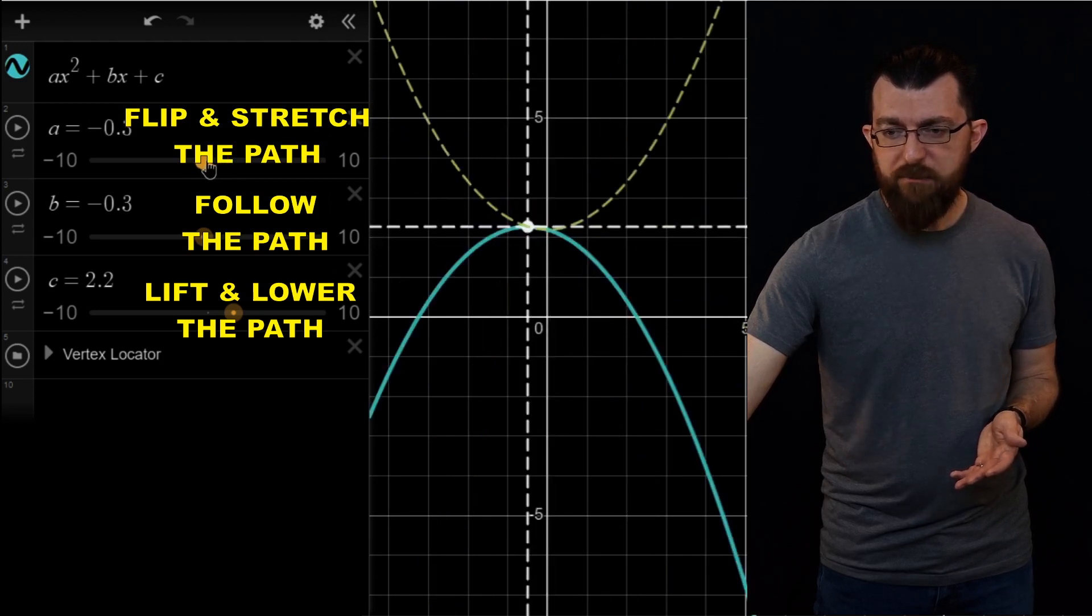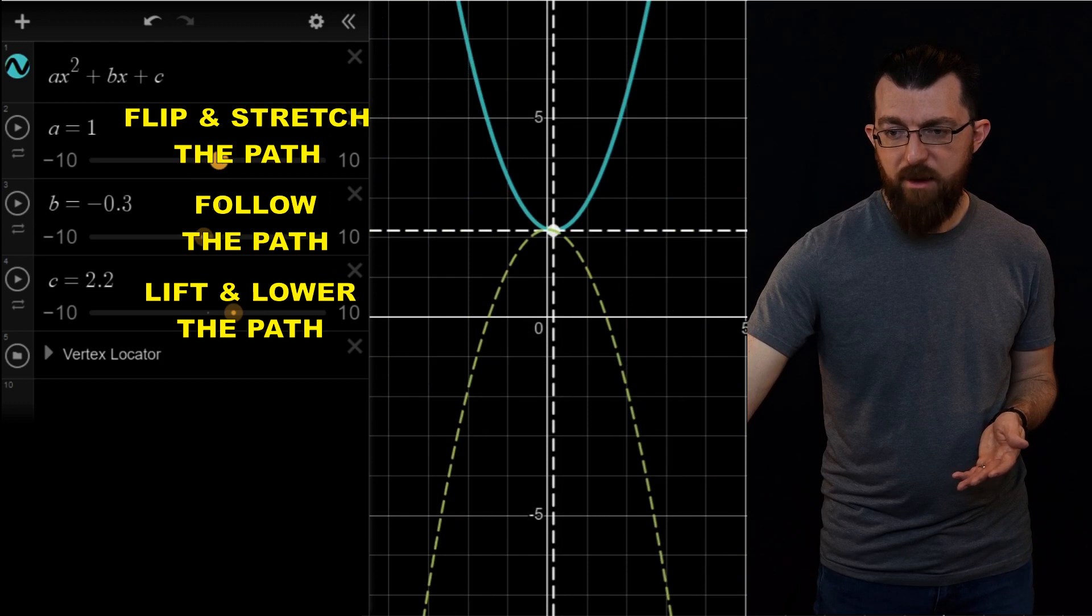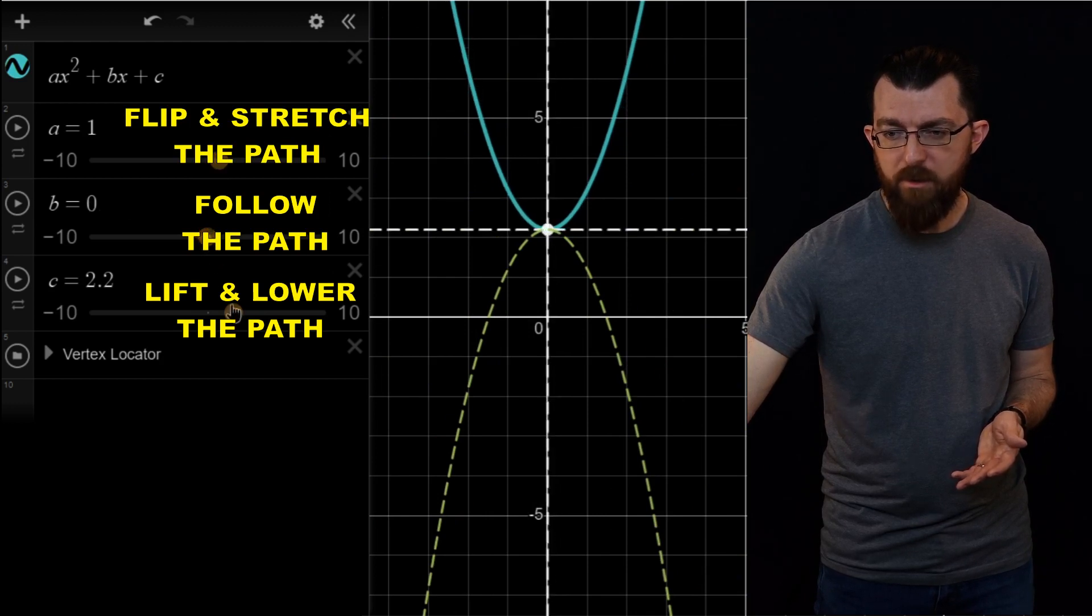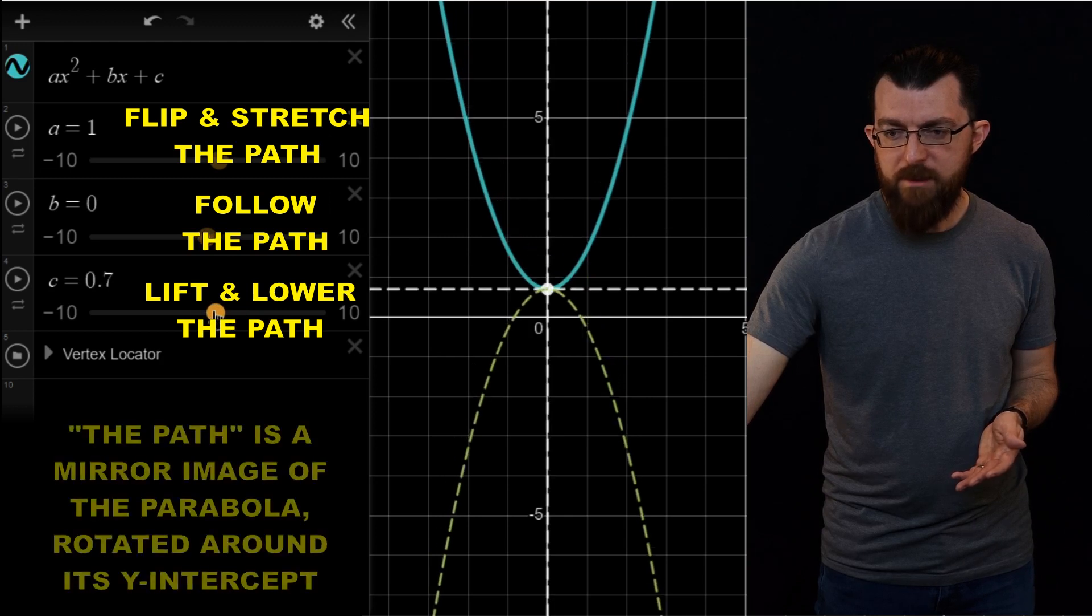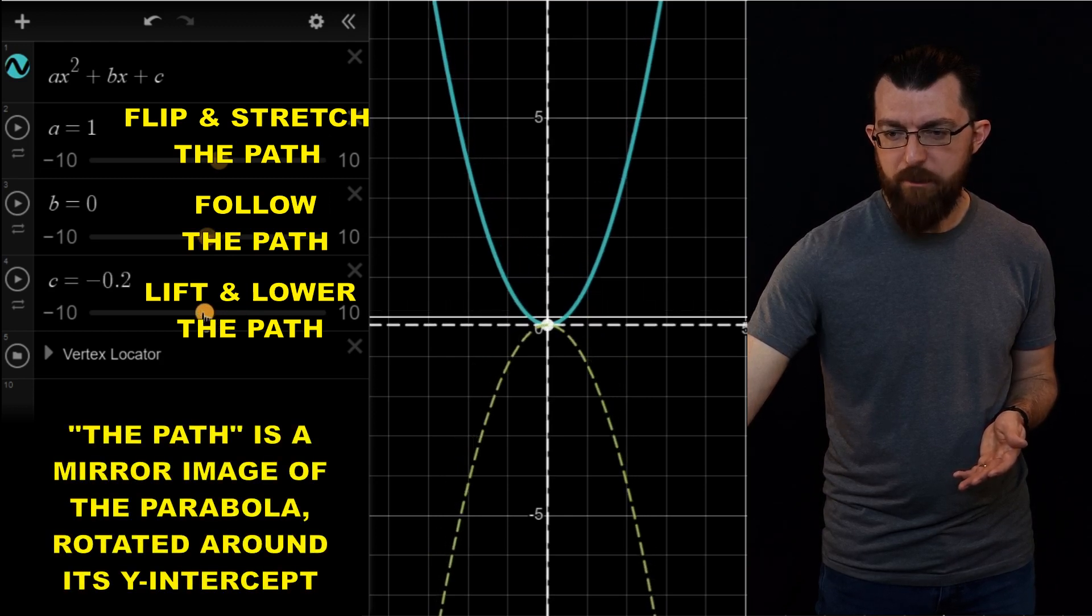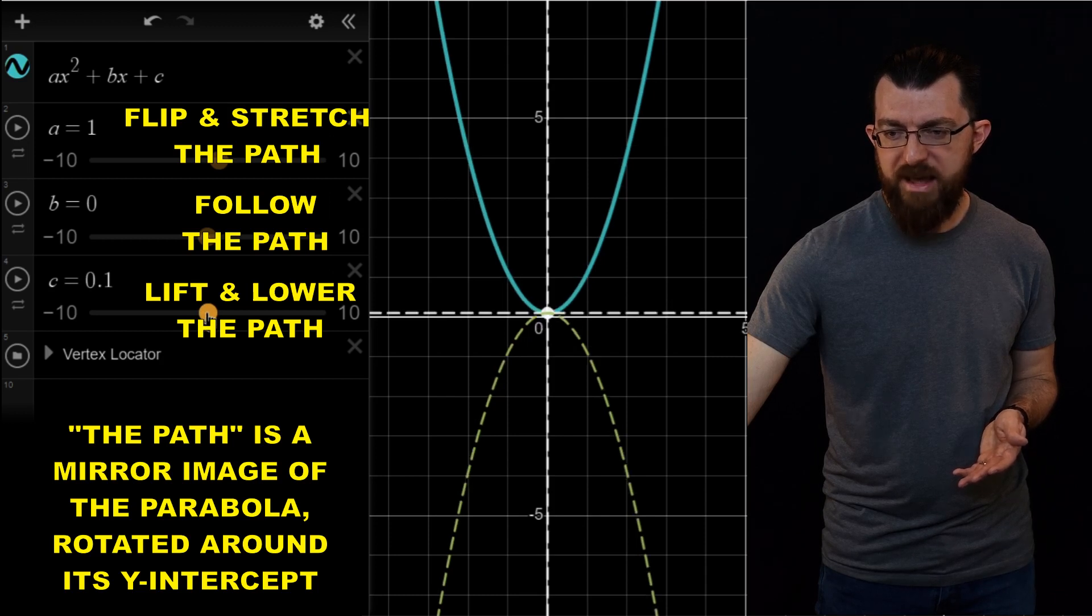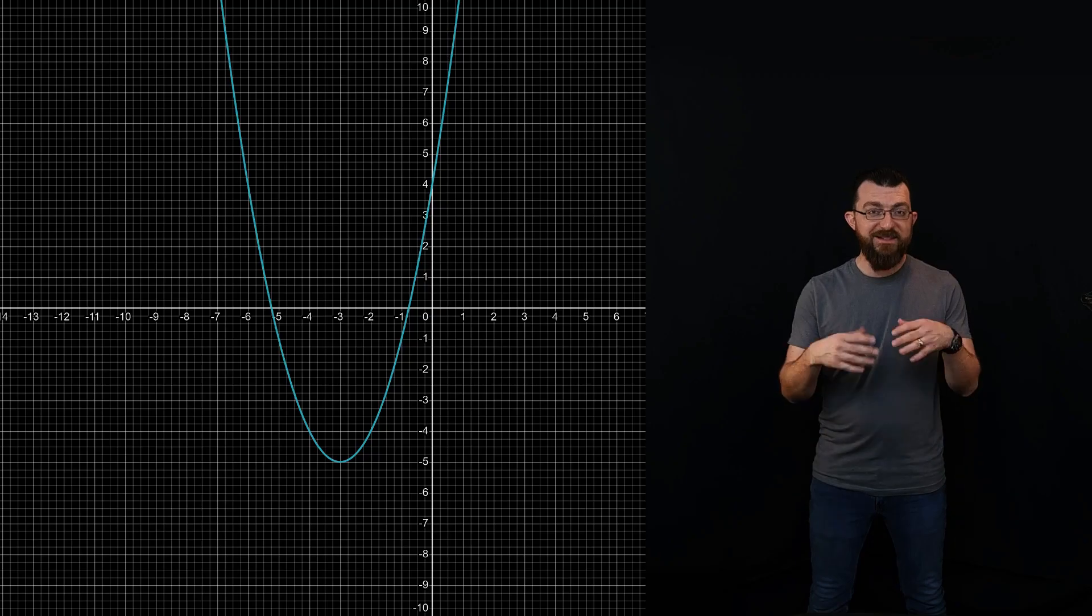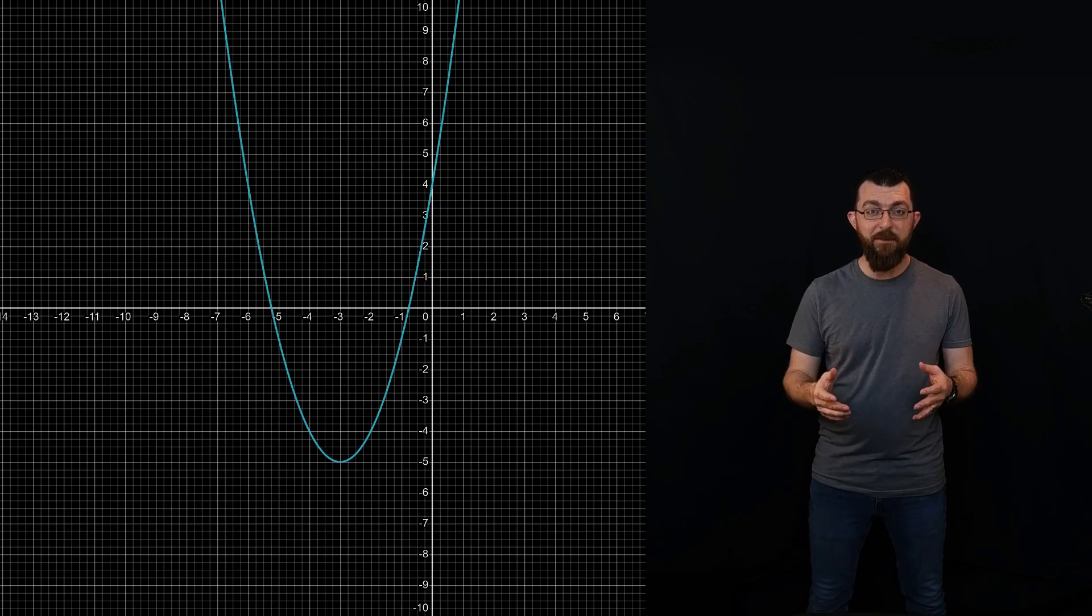Alright, so on the surface level, A is flappy. B makes it duck down side to side. C makes it move up and down. But if you dig a little deeper, maybe B makes it follow this ghost mirror path. C moves that path up and down. And A makes it switch places with its mirror. Let's test out our understanding on some examples.